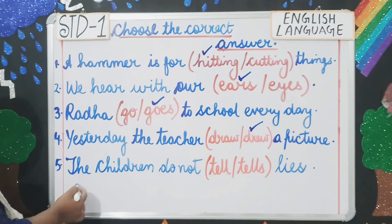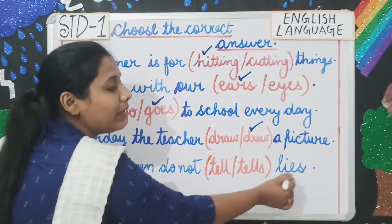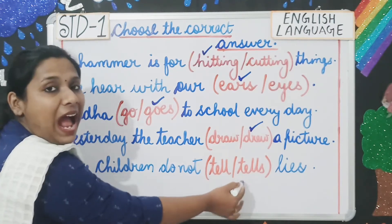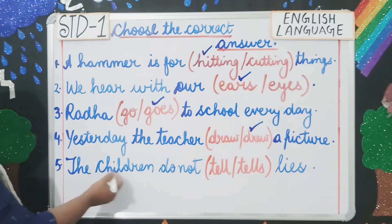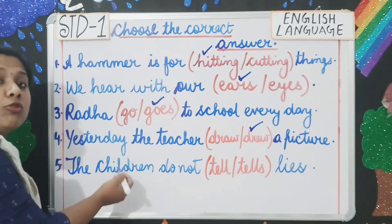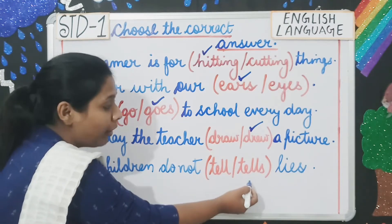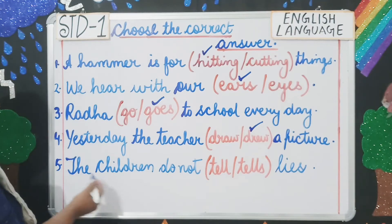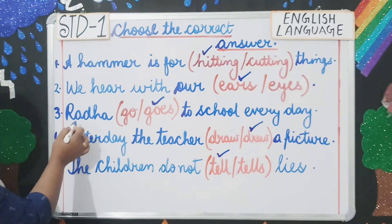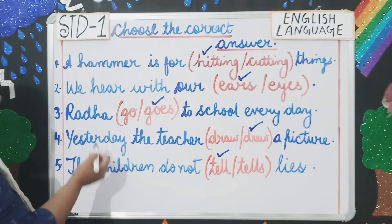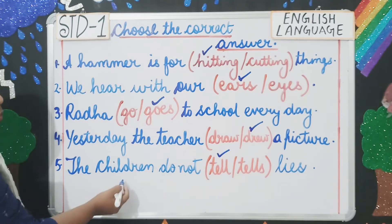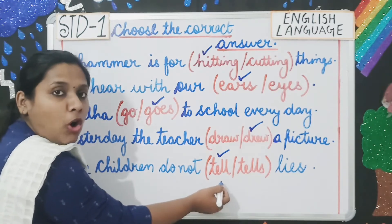Number five: 'The children do not tell / tells lies.' Children is plural, and with plural nouns we do not use the 's' or 'es' form of the verb — we use simple present tense. So we choose 'tell.' Sentence three used singular 'Radha' with 'goes,' while sentence five uses plural 'children' with 'tell' — these are opposites in terms of subject-verb agreement.